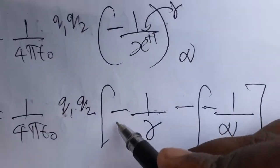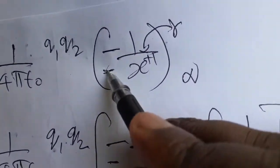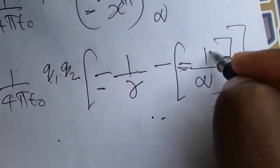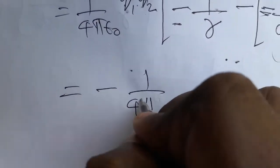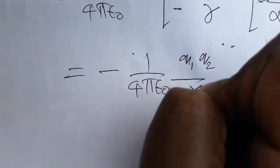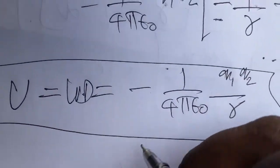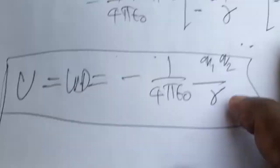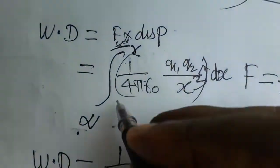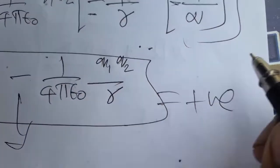Since 1 over infinity equals 0, that term vanishes. So the final answer for work done — which is also the electrostatic potential energy — is minus 1 over 4 pi epsilon naught times q1 q2 divided by r. The negative sign appears because we applied an external force bringing the charge from infinity to that point. If you account for the sign of the external force correctly, the potential energy comes out as positive.